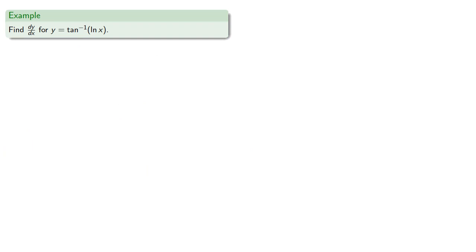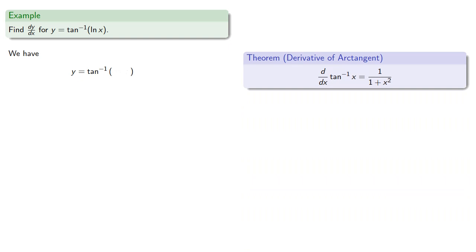And all the usual rules apply. So this is arctangent of whatever, so we differentiate, put things back where we found them, and simplify.